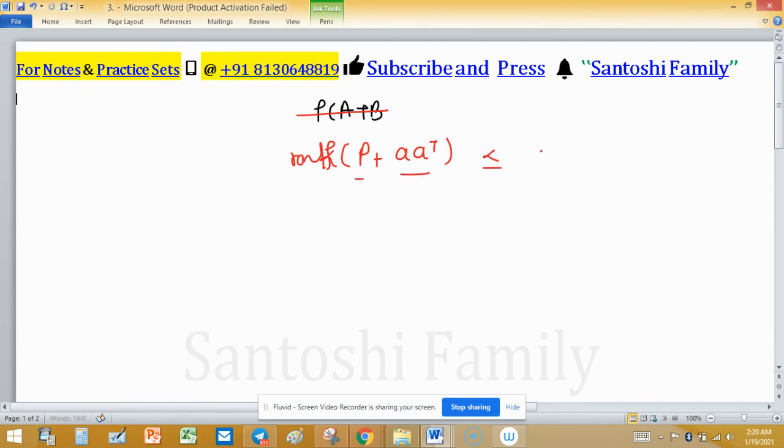So write, matrix, rank of P plus, so normally I write rank because P is given. Otherwise row and P you can misguide. P plus A A transpose. Because this is sum, so it will less than equal to rank of P plus rank of A A transpose, and greater than equal to rank of P minus rank of A A transpose.